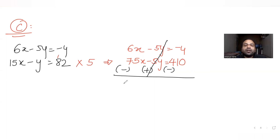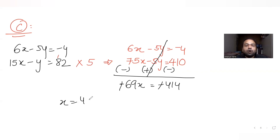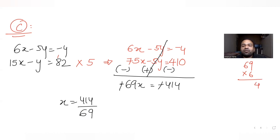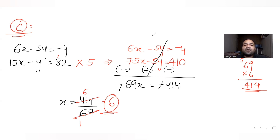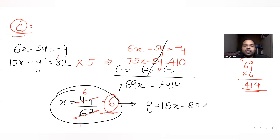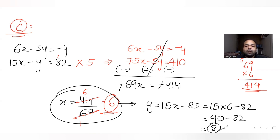Subtracting, the y terms cancel and I get 75x minus 6x equal to 69x, and 410 minus (minus 4) gives 414. So x equals 414 divided by 69, which gives x equal to 6. Substituting x equal to 6, I get y equal to 8. So the third vertex C is (6, 8).